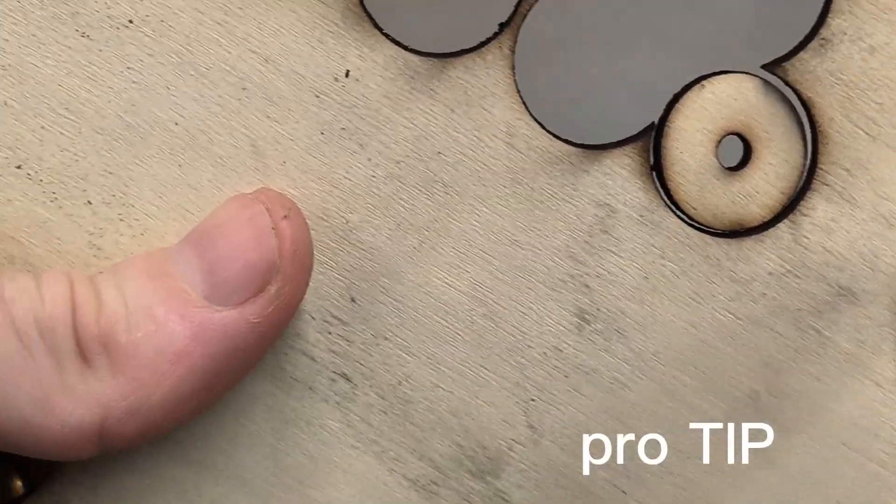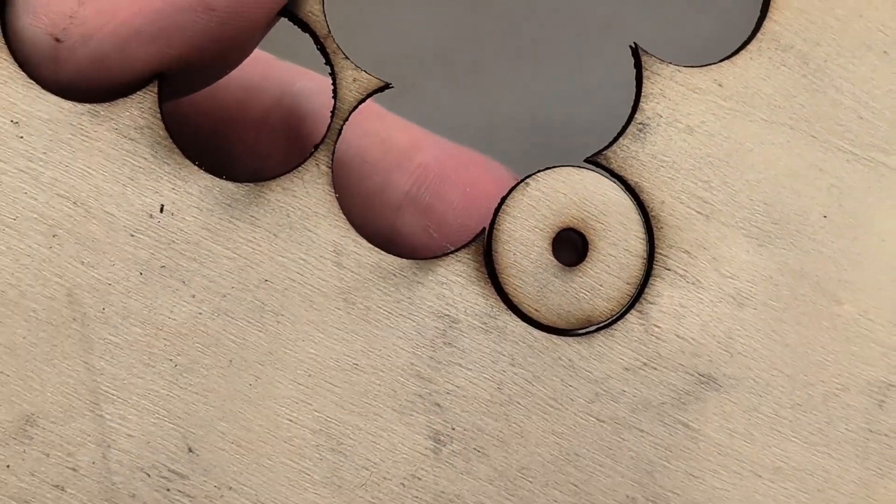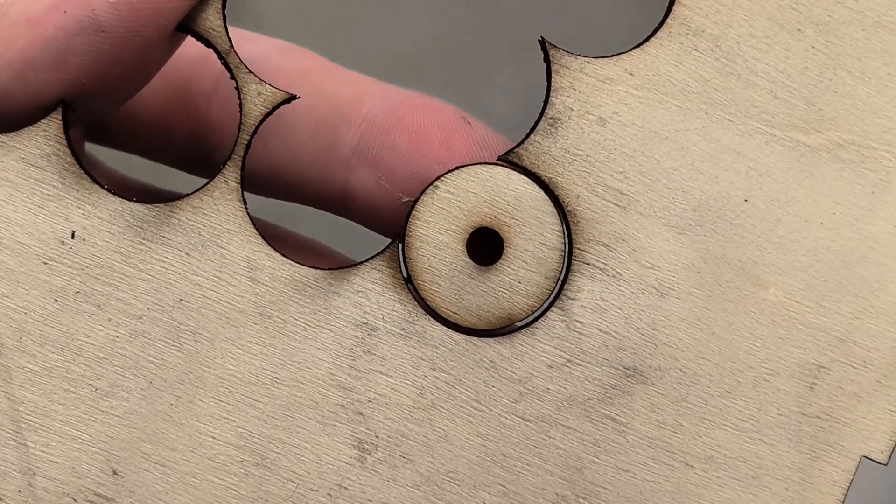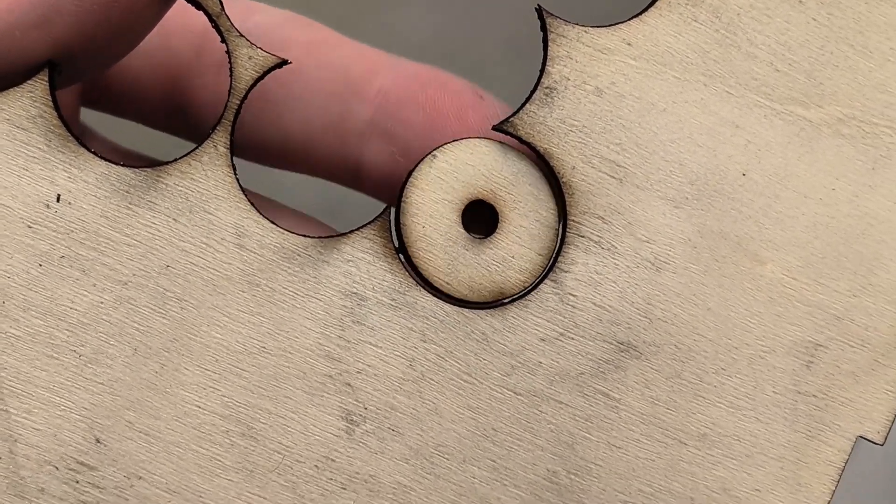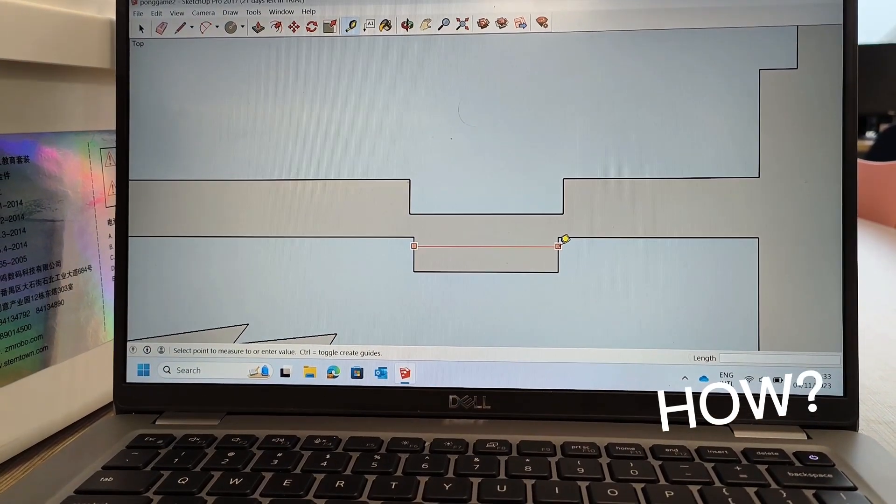We need to offset because as the laser cuts, it does cut a certain width. You can actually see there's a small crack around that hole, so we have to compensate for the width of the laser so the parts perfectly fit.